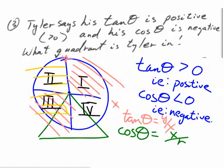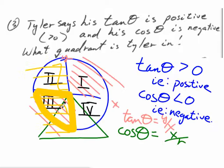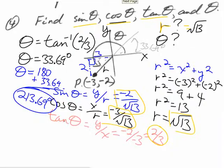So he's in quadrant one or three for tangent positive, and quadrant two or three for cosine negative. The only overlap is quadrant three. So it turns out Tyler is in quadrant three — we just look for him in that quadrant of the Ferris wheel, because that's where his tangent is positive and his cosine is negative.